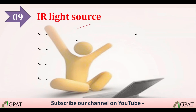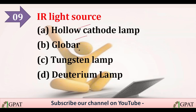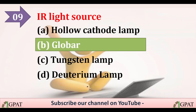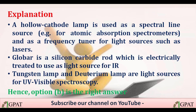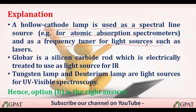The next question: what is the IR light source? Options are: option A hollow cathode lamp, option B Globar, option C tungsten, option D deuterium. The correct answer is Globar. The hollow cathode lamp is used as a spectral line source in atomic absorption spectrometers and as a frequency tuner for light sources such as lasers.